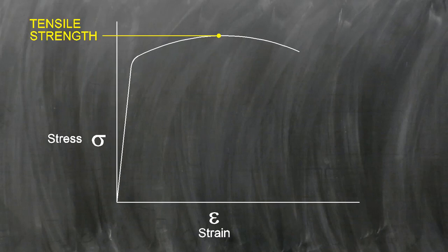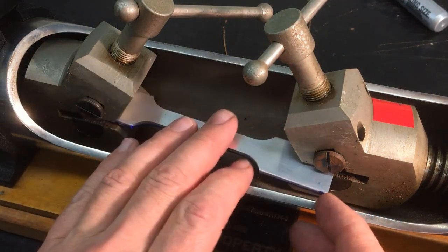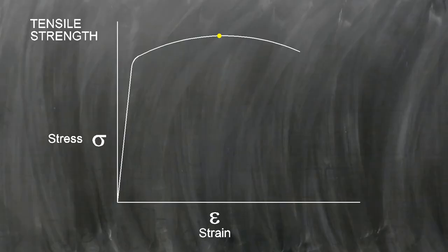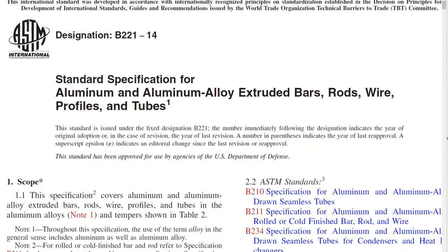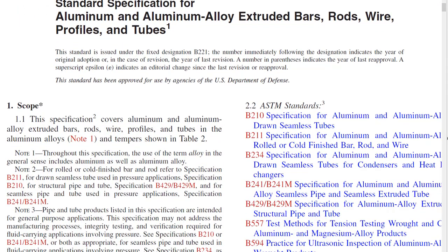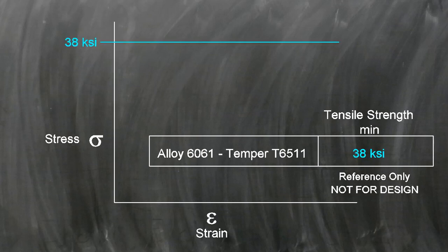We do a tensile test to determine how strong a material is. For instance, we might test an aluminum part to evaluate its ultimate tensile strength. That is, where the stress peaks on our diagram. We see here that according to this ASTM standard, the aluminum we are testing has a minimum tensile strength of 38 KSI.